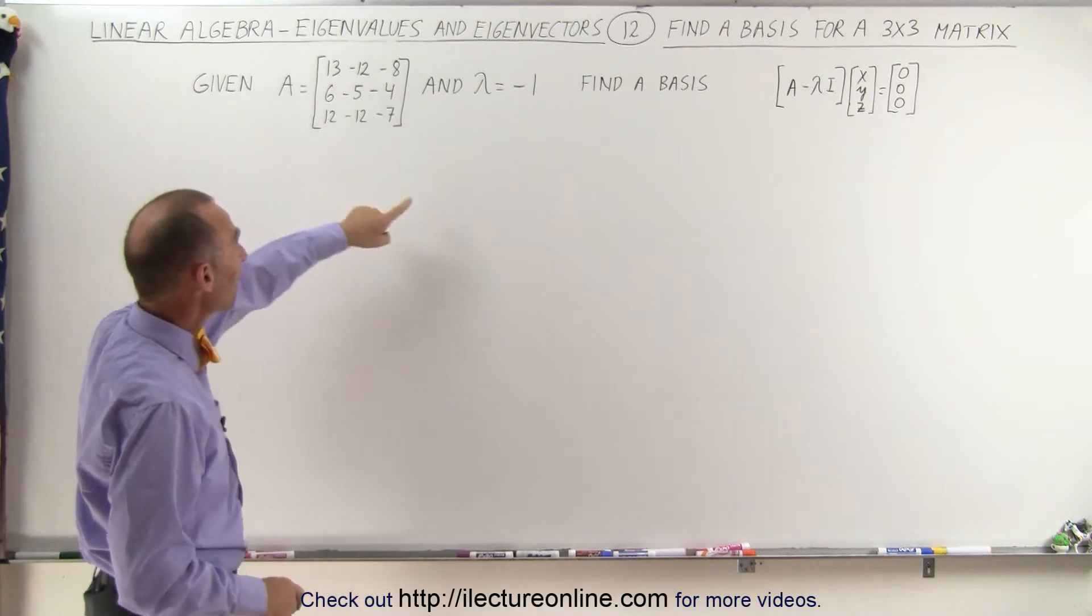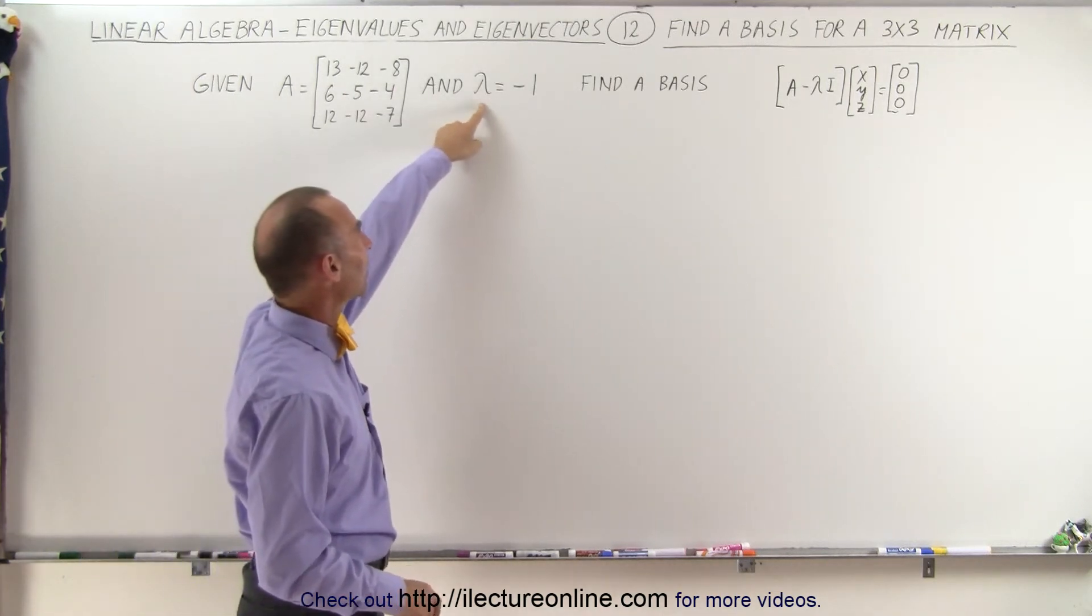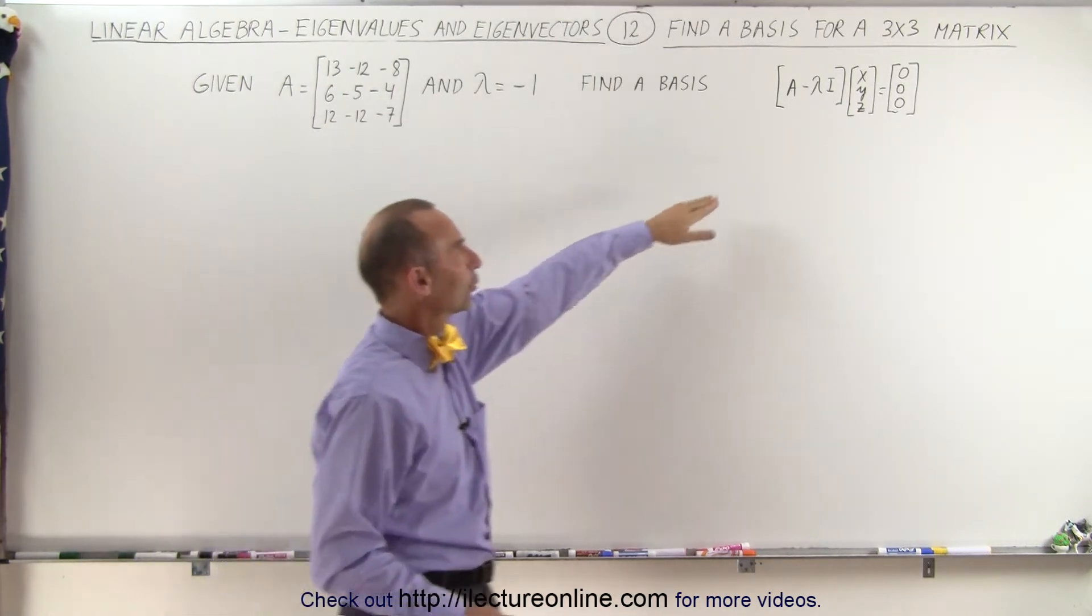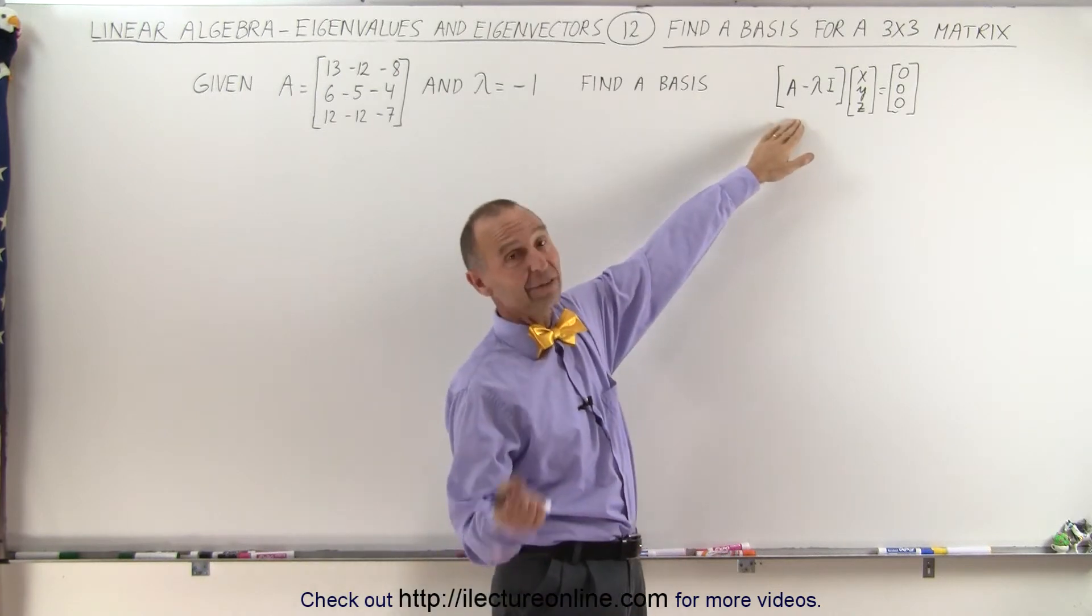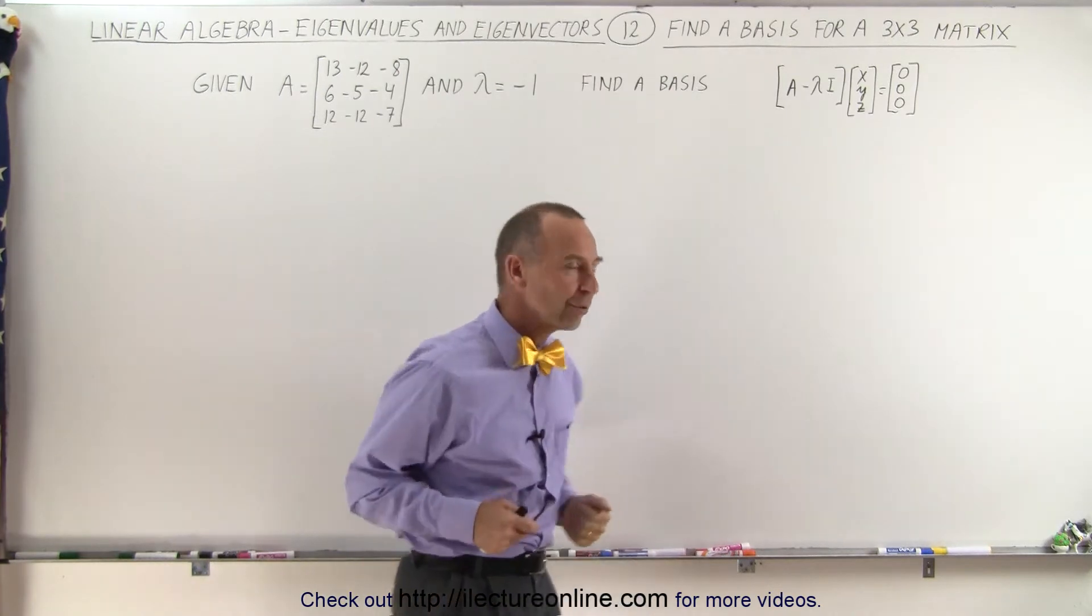Here, A is defined, and we have one eigenvalue, lambda equals negative 1, and we're going to use this principle here to find the eigenvector, which then, of course, helps us find the basis.